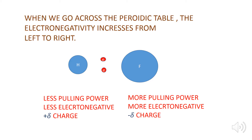When we go across the periodic table, electronegativity increases from left to right. Fluorine is the most electronegative element because it has the highest electronegativity — its pulling power is greater than every other element. Therefore, fluorine carries a partial negative charge, whereas hydrogen is the least electronegative element with less pulling power, giving it a partial positive charge. Fluorine attracts the electron pair a little more than hydrogen, making it partial negative.